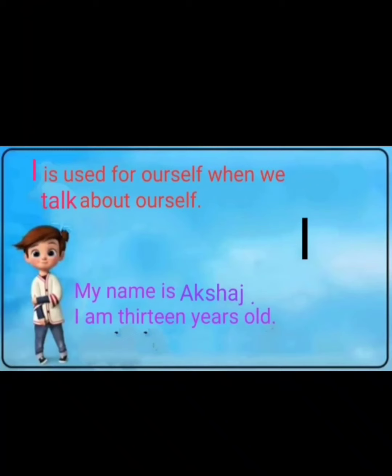Use of I. 'I' is used for oneself when we talk about ourselves. We use 'I' whenever we give an introduction. Here you can see a picture of a boy and the name of the boy is Akshaj. Akshaj is giving his introduction and saying: my name is Akshaj, I am 13 years old. So 'I' is used for giving introduction of oneself.